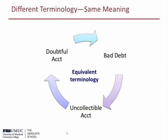To reduce confusion with respect to accountants using different terms for the same account, please note that bad debt expense is the same as doubtful account expense and also the same as uncollectible account expense. Therefore, allowance for bad debt is the same as allowance for doubtful accounts and also the same as allowance for uncollectible accounts.